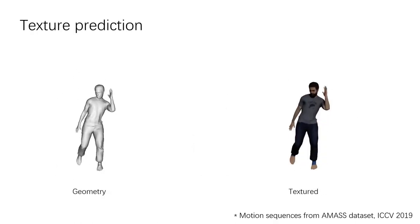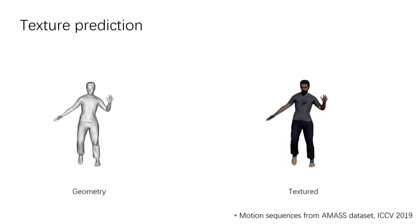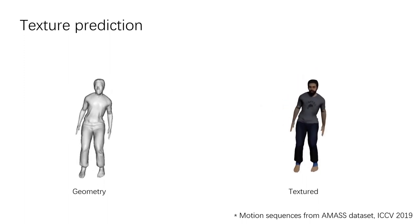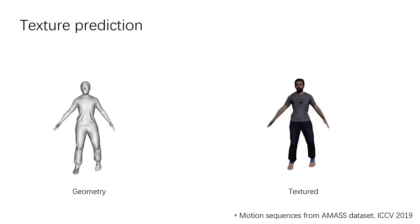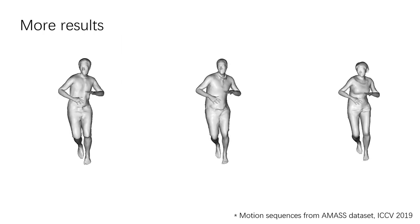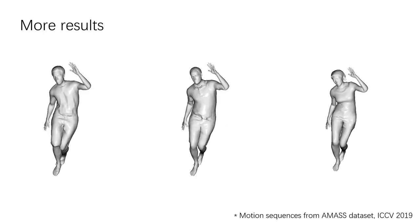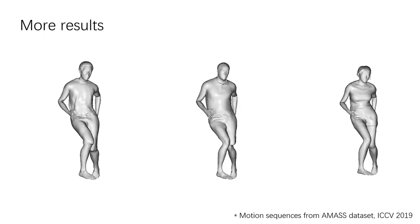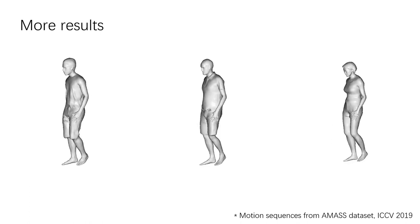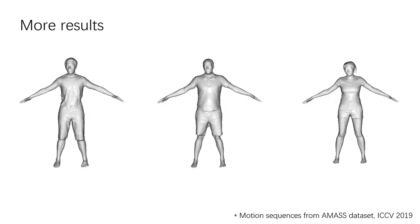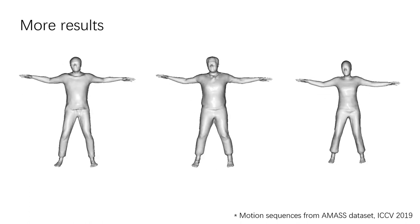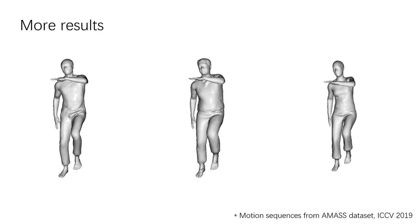Our approach also supports learning texture models on the surface without a template model. Finally, we obtain fully textured avatars called Scanimates. Because we use SMPL as a foundation, we can repose and animate Scanimates using simple pose parameters. Here we show examples of animating Scanimates using sequences from AMASS.